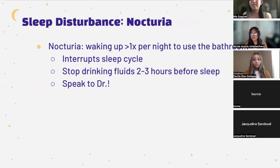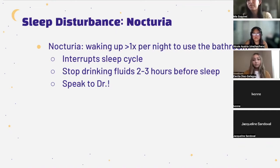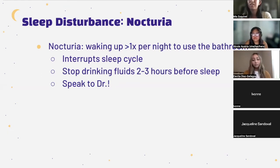One sleep disruption particularly common for older adults is nocturia — the occurrence of waking up at least once per night to use the bathroom. This has a big interruption to your sleep cycle and makes falling back asleep difficult. One thing to prevent nocturia is to stop drinking fluids two to three hours before sleep. Make sure to hydrate earlier in the day — morning and afternoon — but limit fluids in those two to three hours before bed. If you are experiencing consistent nocturia, waking up more than once per night, definitely speak to your doctor, as there could be other factors involved.